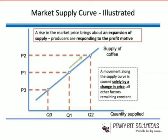At a higher price, a greater quantity will be supplied to the market. At a lower price, supply is likely to fall because retailers, wholesalers, and producers are not making sufficient profit. A rise in market price brings about an expansion of supply — producers are responding to the profit motive. If there is an increase in price, they're likely to have a bigger profit and therefore want to supply as much as possible.